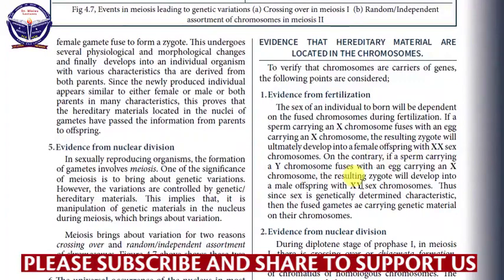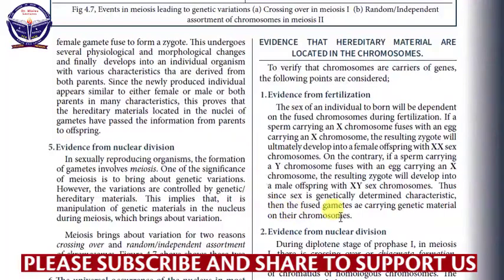So it is the chromosome that determines the sex of an individual, because sex is genetically controlled. Thus, since sex is a genetically determined characteristic, the fused gametes are carrying genetic material on their chromosomes. So the gamete cells are carrying genetic material on their chromosomes. This is one of the pieces of evidence proving that the genetic material is carried by the chromosomes.